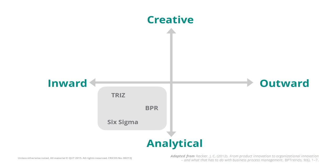The most popular approaches that most people are familiar with are analytical in nature and are inward-looking. TRIS is a family of techniques which fits here, Business Process Engineering, BPR is another family, and Six Sigma. All these redesigned approaches are highly analytical in nature because they have well-established tools to reason about processes, but they are all inward-looking in the sense that they look at existing processes and reason about how to change them.